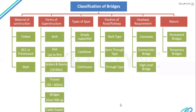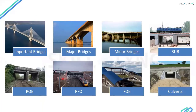As per standards, and even as expected by the client, any bridge we design should sustain for 100 years — that is the design lifespan. There are different types of bridges like minor and major. Important bridges are those whose spans are really large — more than 60 metres or typically 100 metres span length is considered as an important bridge.